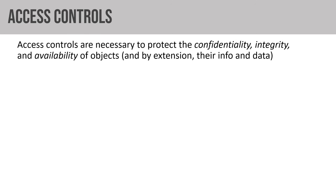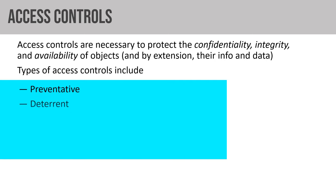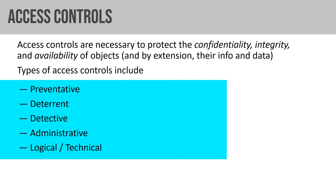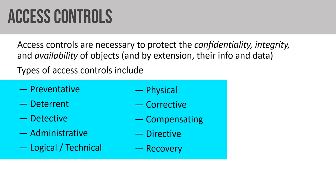Access controls enforce our CIA triad — confidentiality, integrity, and availability. The types of access controls include: preventative, deterrent, detective, administrative, logical or technical (two words for the same type), physical, corrective, compensating, directive, and recovery. The three primary types are preventative, detective, and corrective.